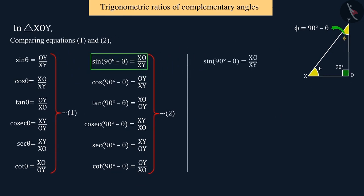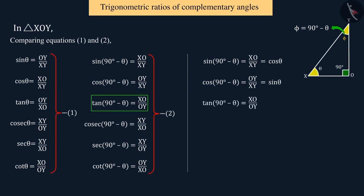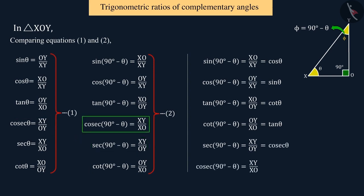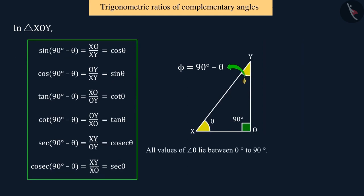Since we have to find the values of trigonometric ratios of complementary angles, let us compare equations 1 and 2. Thus, we can see that the value of sine (90 degrees minus theta) is equal to the value of cos theta. You will also see that cos (90 degrees minus theta) is equal to sine theta. Similarly, tan (90 degrees minus theta) is equal to cot theta. Cot (90 degrees minus theta) is equal to tan theta. Sec (90 degrees minus theta) is equal to cosec theta. And the value of cosec (90 degrees minus theta) is equal to the value of sec theta, where all values of the angle theta lie between 0 degrees to 90 degrees.